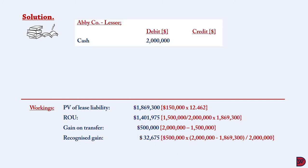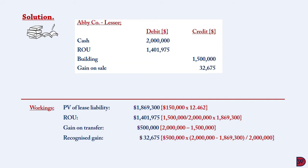The cash proceeds of $2 million will be debited. The right-of-use asset, being an asset, will also be debited. The building, now that it is a sale, will be de-recognized — its carrying value of $1.5 million will be credited. The gain on sale attributable to the buyer will also be credited, and the lease liability will finally also be credited. If you calculate the balances, they will agree.